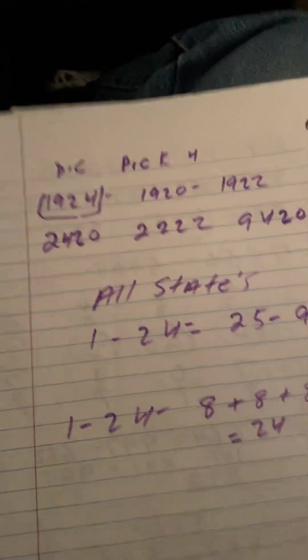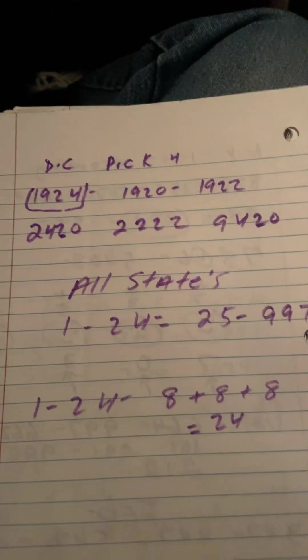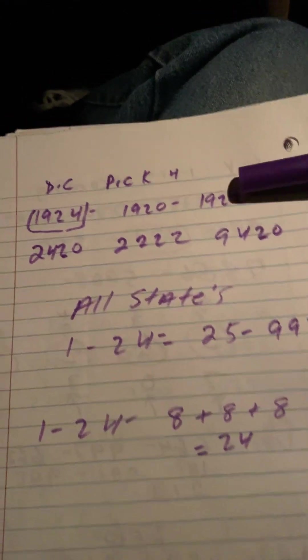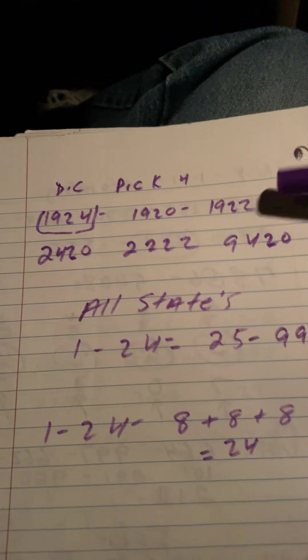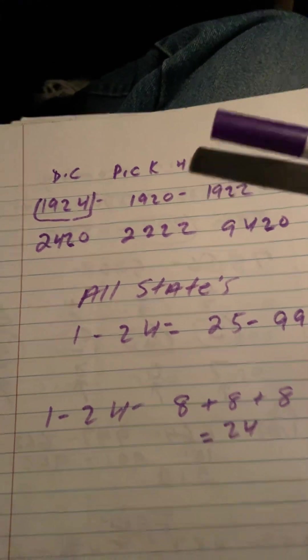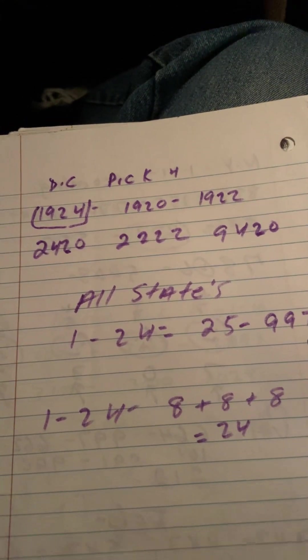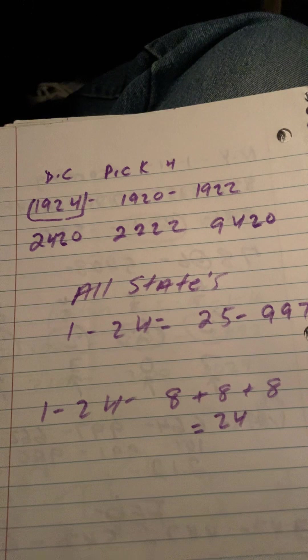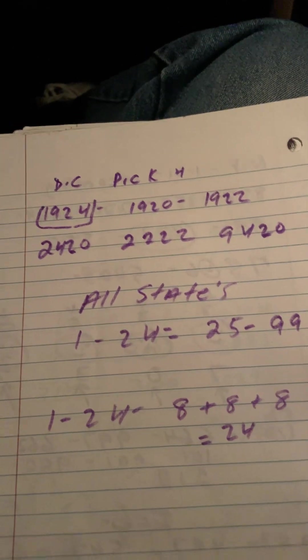Alright guys, right back at you again. 5:20 AM on a Tuesday. I got some Pick 4 hot numbers for DC. Make sure you keep 1924 and 2420 - that is a common number.